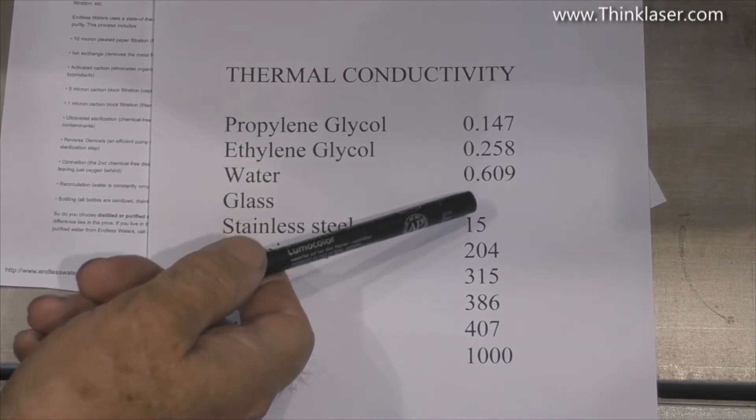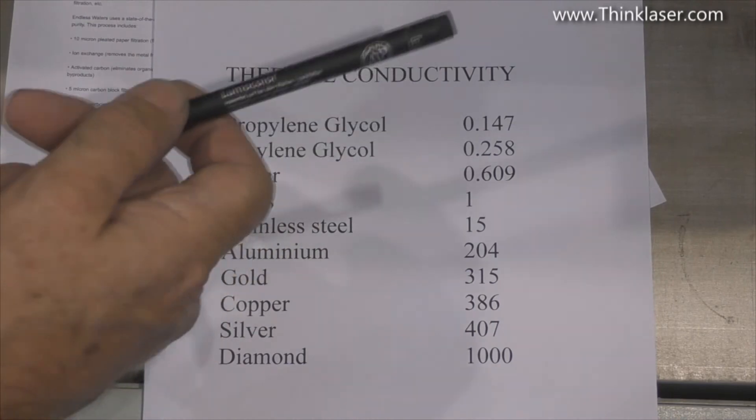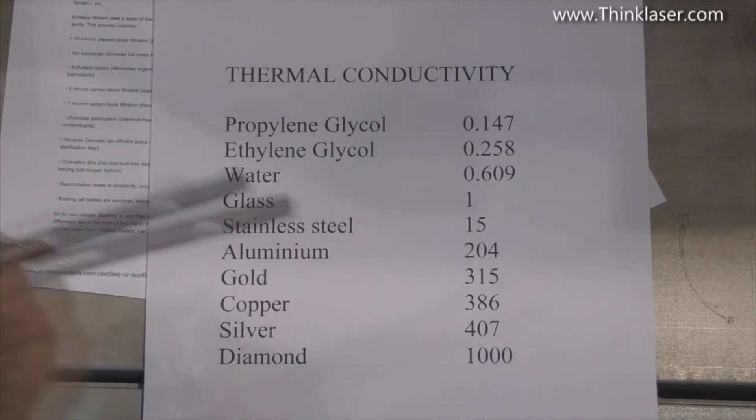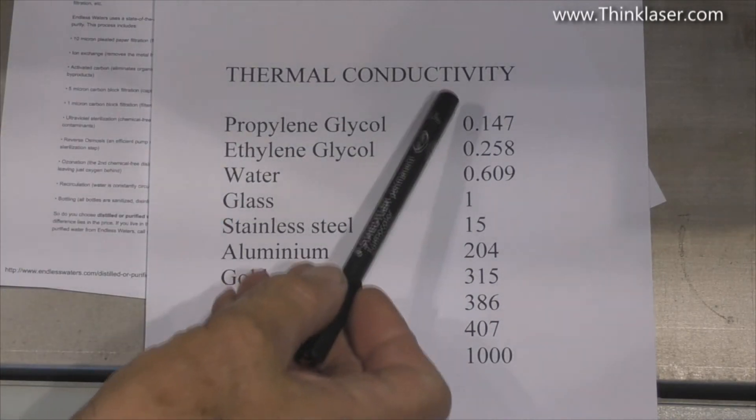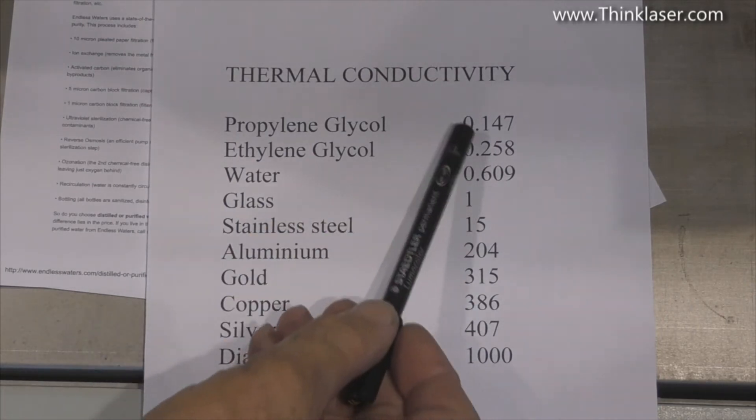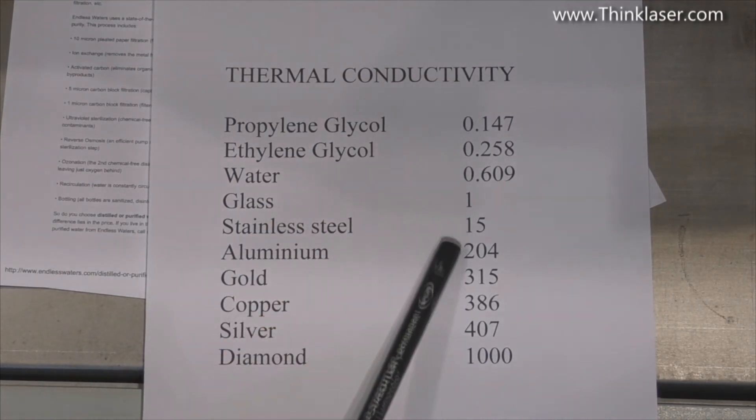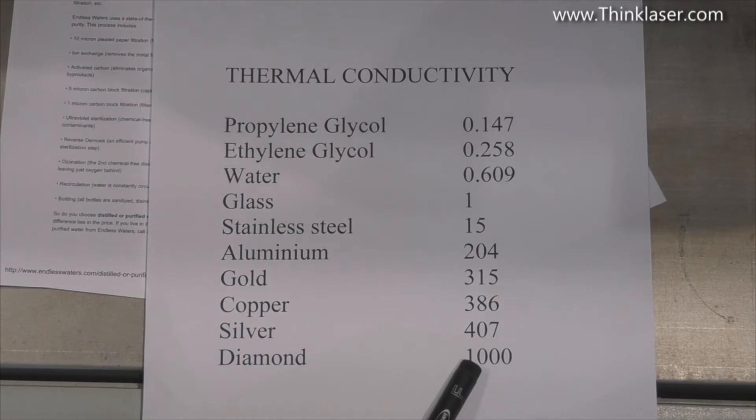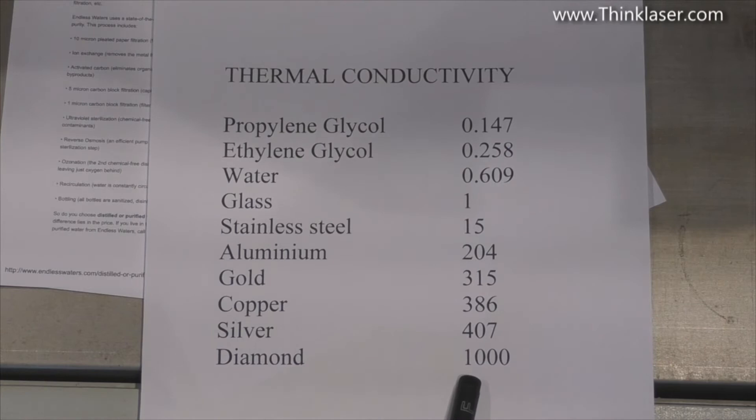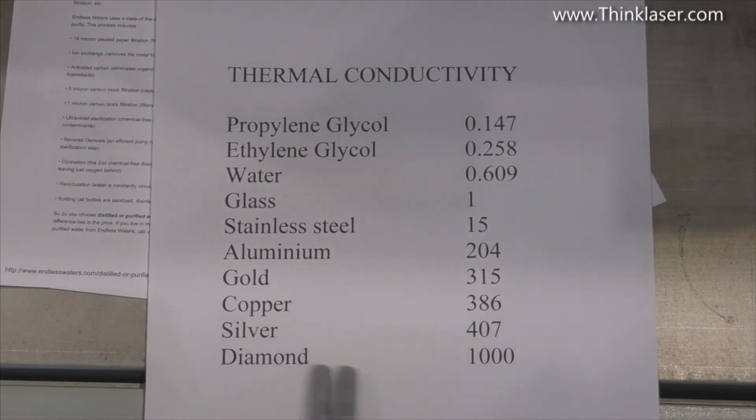These are all relative numbers from very poor to excellent. Now you wouldn't think that diamond was the most effective conductor of heat, but hey the figures are what they are and that's what it says.